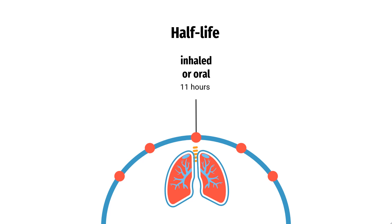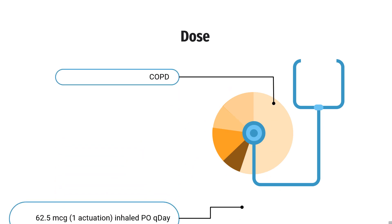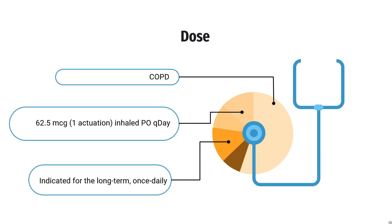Half-life: The effective half-life after once-daily inhaled dosing is 11 hours. Dose for Chronic Obstructive Pulmonary Disease: Indicated for the long-term, once-daily maintenance treatment of airflow obstruction in patients with COPD, including chronic bronchitis and/or emphysema. The recommended dose is 62.5 micrograms, 1 actuation, inhaled once daily.